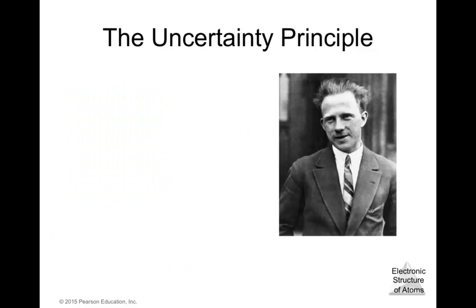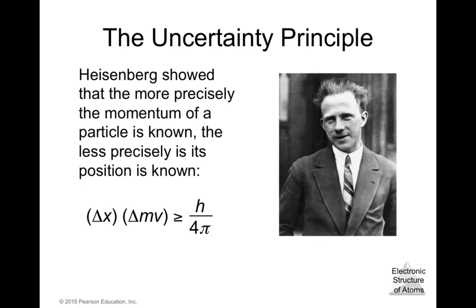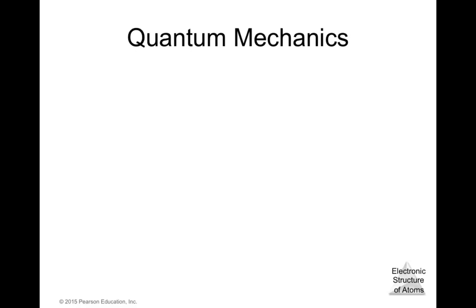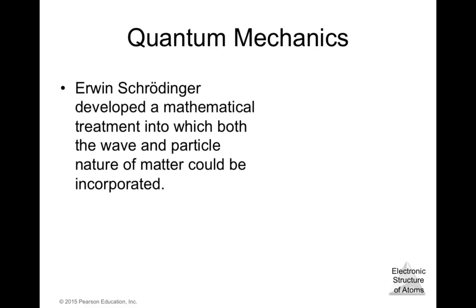Now let's talk about the uncertainty principle. Heisenberg showed that the more precisely the momentum of a particle is known, the less precisely its position is known. In other words, the position of an electron is essentially unknown — we can have an idea but cannot precisely place it at a specific point. To address this, quantum mechanics was developed, with a mathematical treatment by Erwin Schrödinger.